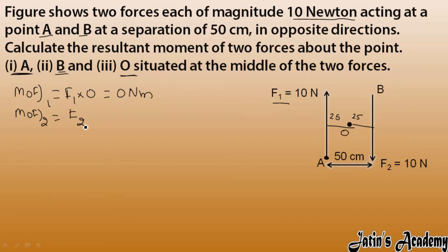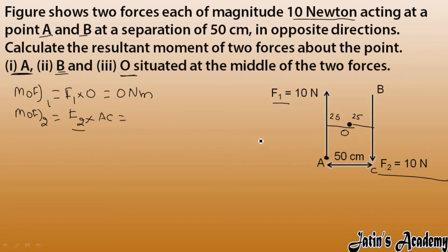For the moment due to F2, we have force into perpendicular distance. F2 is 10 Newton, the line of action of this force is at point B, and the fixed point is A — so the perpendicular distance is AB, which is 50 centimeters. Converting: 10 × (50/100) = 5 Newton meters.